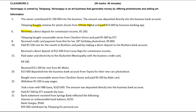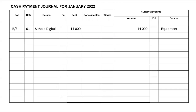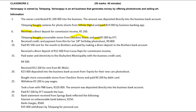Still on the sixth, it says it's a bank payment — we are buying consumable stores from Check-in Stores and paid 5,000 by EFT. Since we are making a payment, it goes to the cash payments journal. You will write BS, the day will be the sixth, we are making a payment to Check-in Stores — it goes under bank as well as consumables.